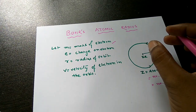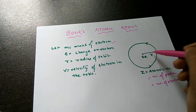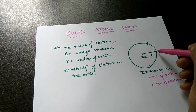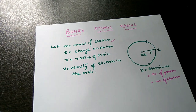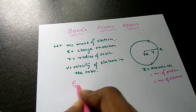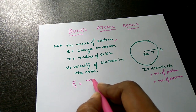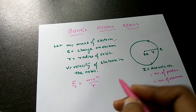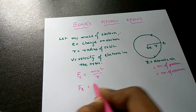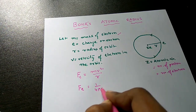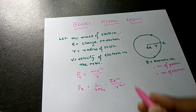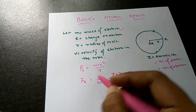This centripetal force is provided by the electrostatic force between the two charges — the positive charge at the center and the electron at the orbit. The centripetal force FC equals MV² divided by R, and the electrostatic force equals (1 / 4πε₀) × ZE² / R².